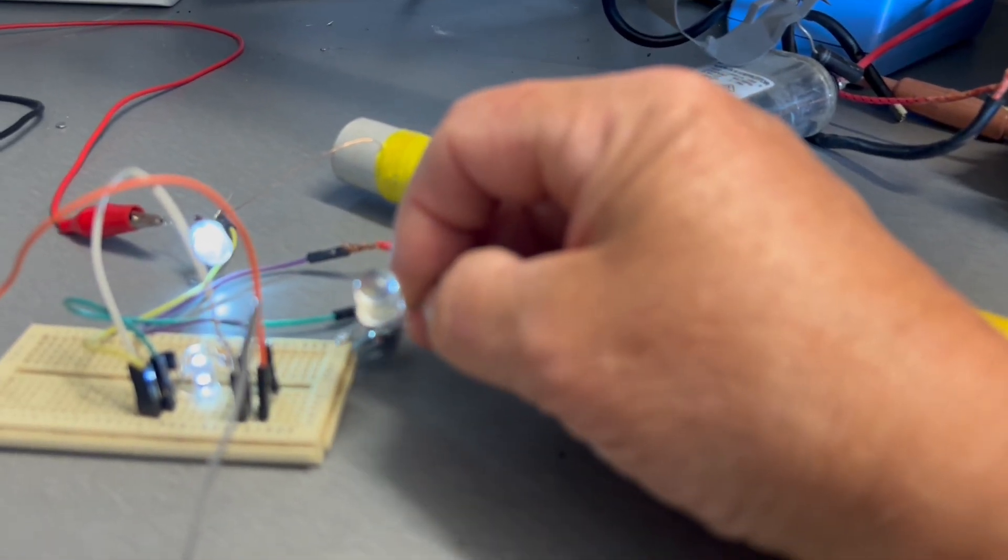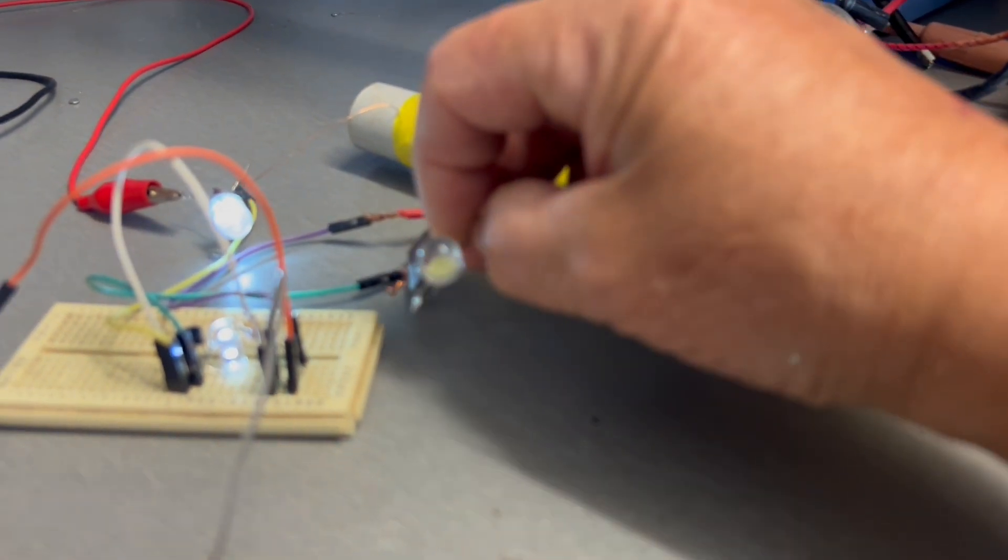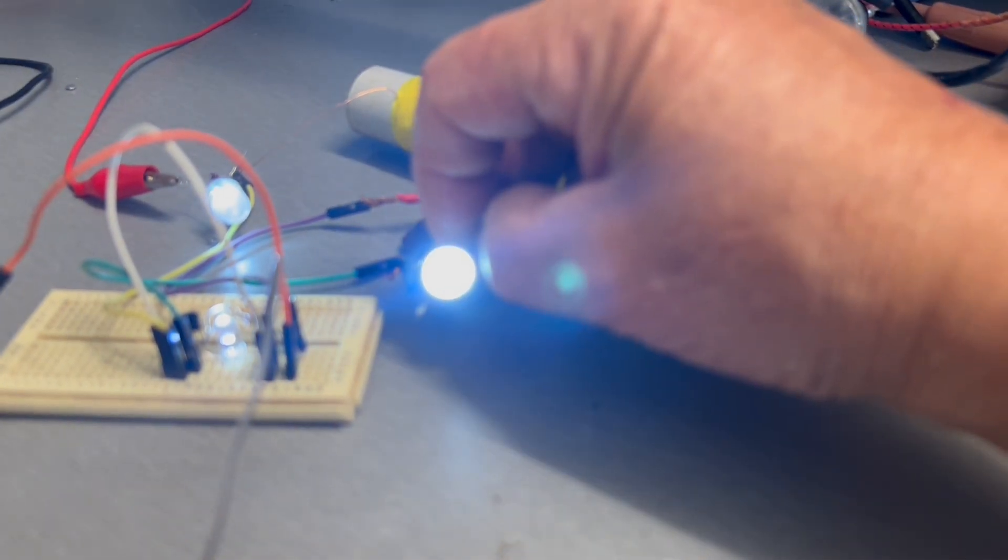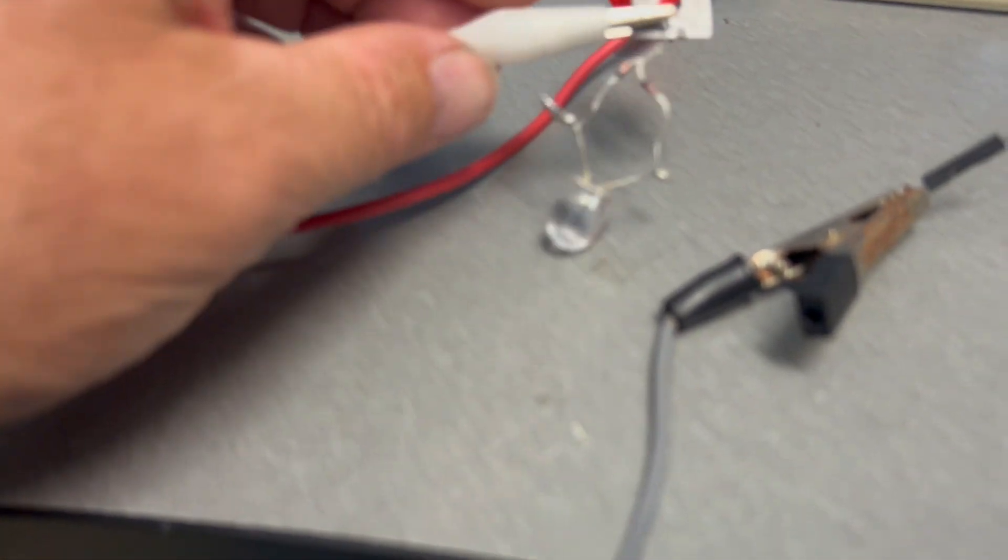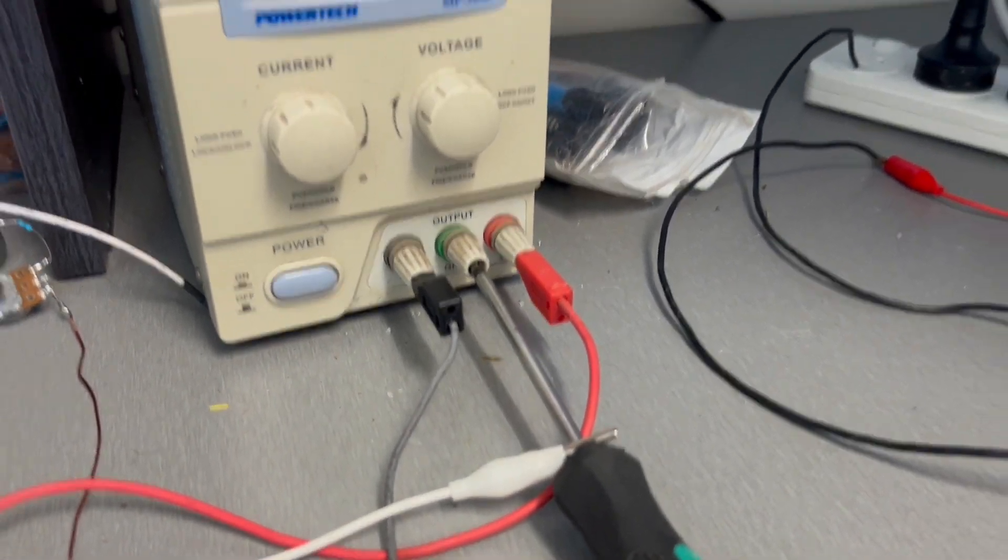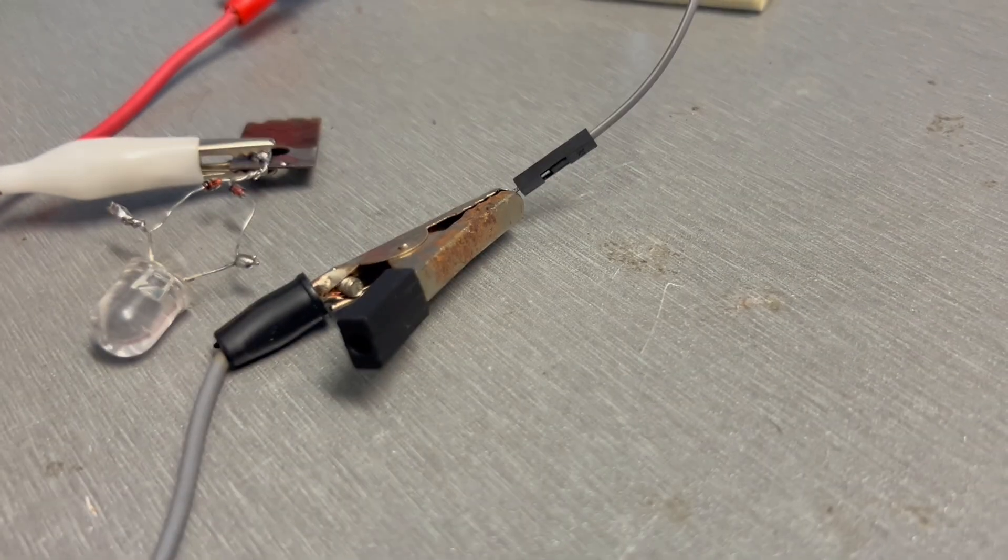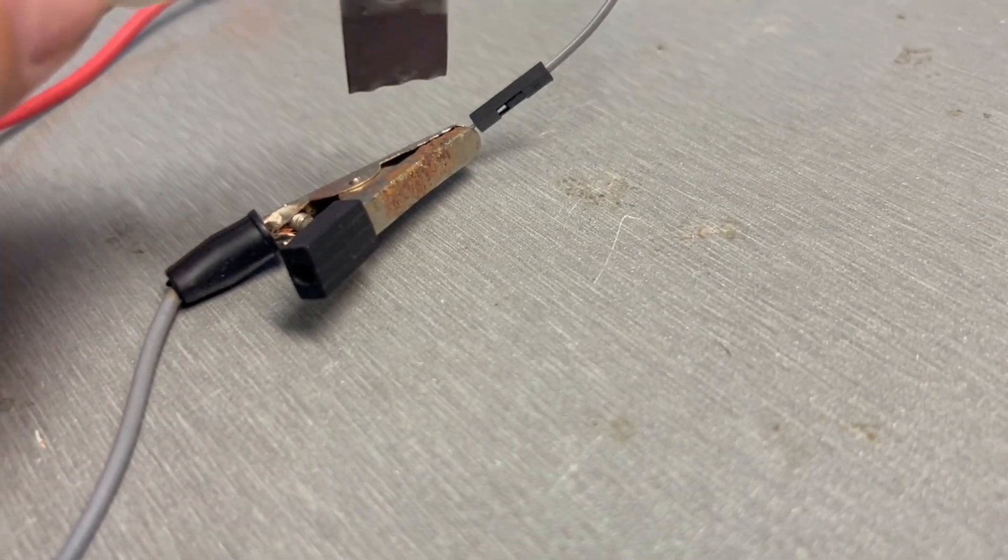And of course we can put this on either side of our inputs on our primary. So as you can see, it's almost drawing bugger all, two parts of nothing. But what I'm going to do is I'm going to put that onto our screwdriver, which goes to our pseudo-earth of our power supply. And I'm going to put that on the earthed power supply.